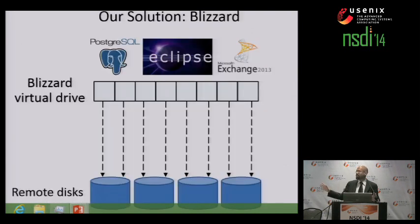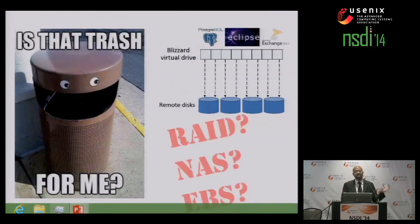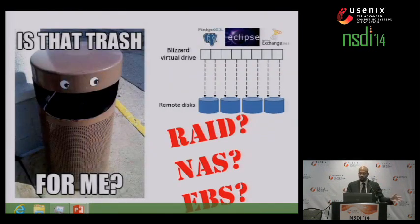Here's a basic outline of the solution, which we call Blizzard. The basic idea is pretty simple. Blizzard is going to expose a virtual drive that applications can read and write just like a real drive. Behind the scenes, Blizzard is going to stripe that virtual drive across multiple remote disks. Now, you're probably saying this sounds like a lot of stuff I've already heard before — this sounds like RAID, network attached storage, Amazon's elastic block store.